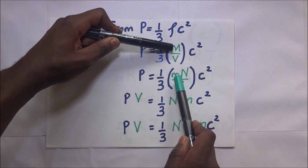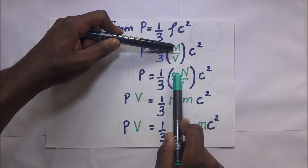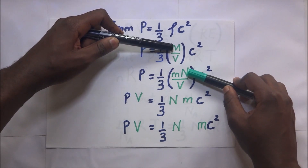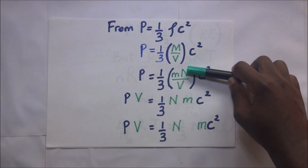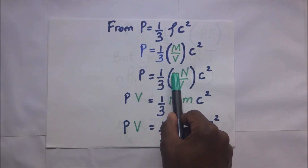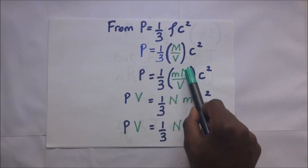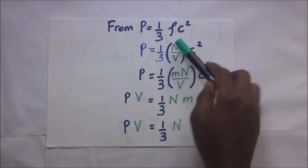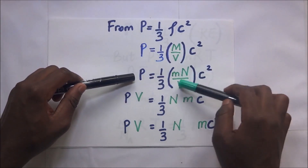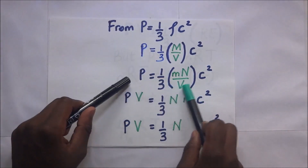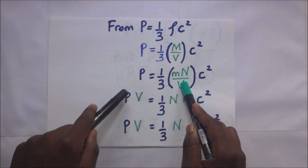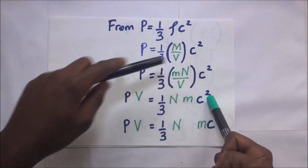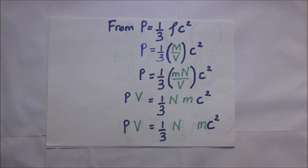We know that density is equal to mass over volume, with capital M being the total mass of all the particles in the gas, times C squared. Capital M can be broken down: small m represents the mass of every individual particle, multiplied by capital N which is the total number of particles. So small m times capital N gives us capital M. This is over V times C squared, and when we multiply V on both sides, we get PV equals one-third N times m times C squared.